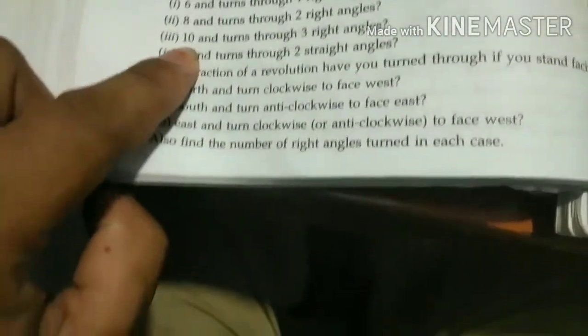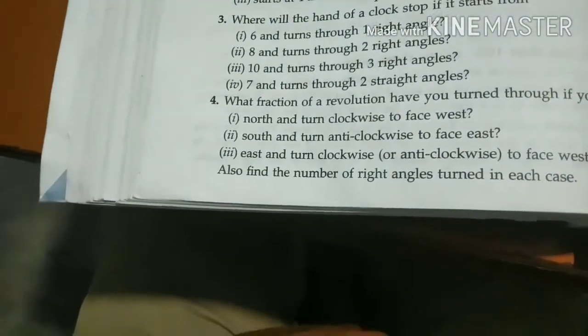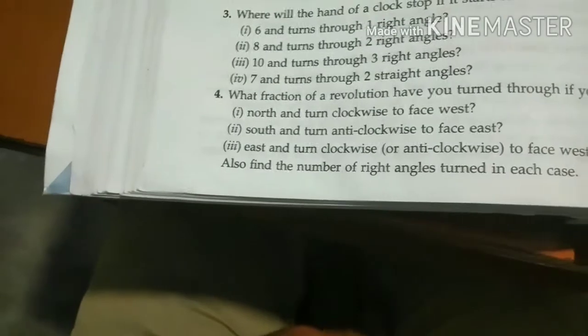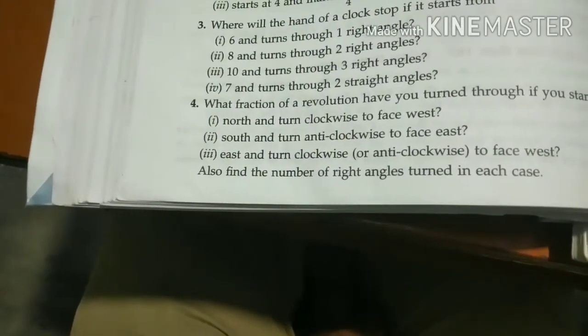Question number 10, do it yourself - turns 3 right angles means you go 9 points ahead. That gives 19, and 19 minus 12 equals 7. Fourth number: 7 and turns through two straight angles.